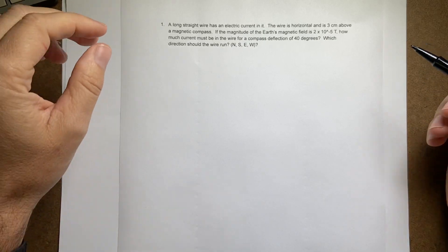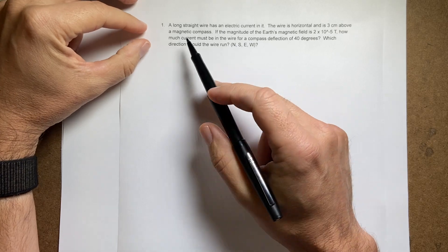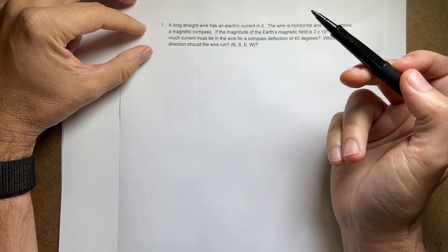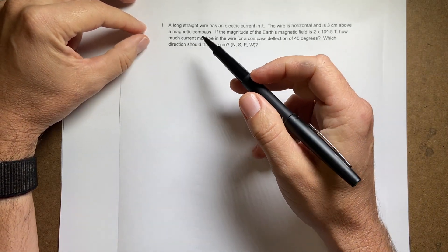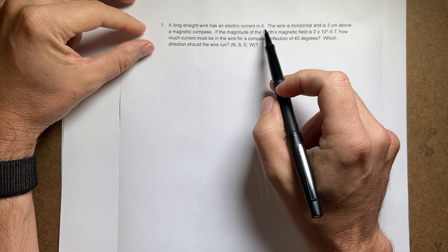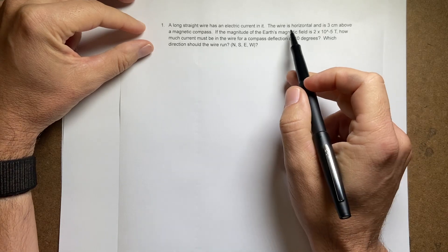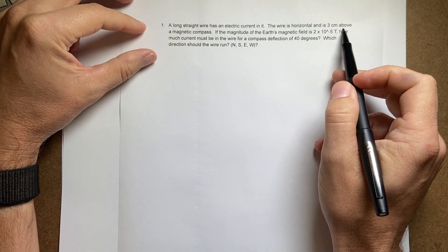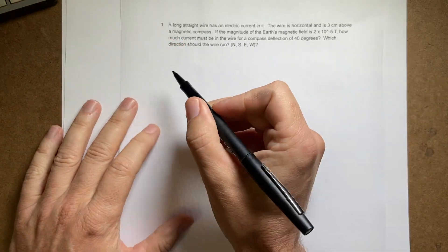Okay, it's time to solve another practice problem. So let's just look at what we have here. This is a common problem, but I wrote this one. But you'll find a lot like this. A long straight wire has an electric current in it. Got that. The wire is horizontal and three centimeters above a magnetic compass. I should get a compass.